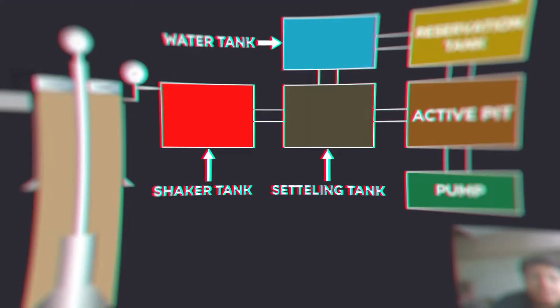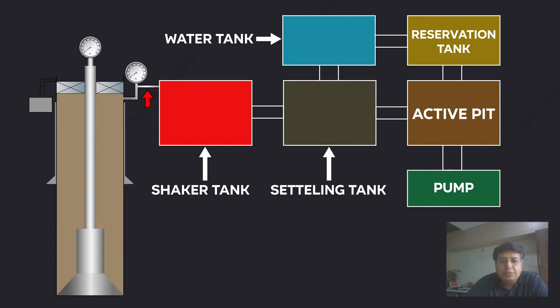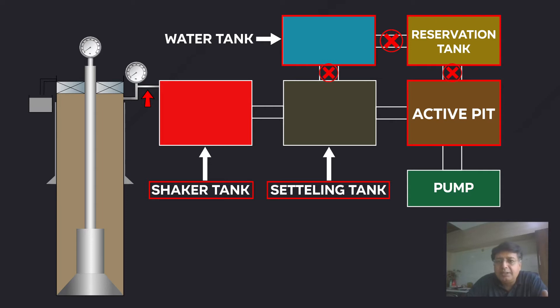Here we can see that from the flow line, the mud goes to the shaker tank, then we have the settling tank, and then finally we have an active pit. We also have a reserve pit plus water tank. These all tanks are connected to each other but isolated with a valve. So every tank has a connection with the other tank, and there is a valve which isolates the tanks.